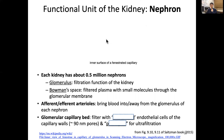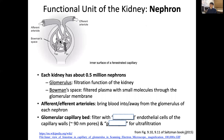Let's summarize the functional unit of the kidney - the nephron. The afferent arteriole brings blood into the glomerulus where filtration occurs, and the efferent arteriole carries blood away. The filtered part comes out into the Bowman's space.